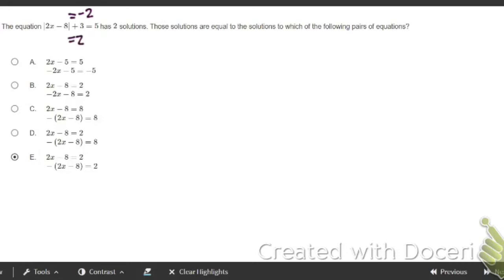So if you set it up, it'll be like 2x minus 8 equals 2, and 2x minus 8 equals negative 2. Remember, these are all an absolute value, so that's what the goal is ultimately to do. And the ones that look just like that is answer choice E.